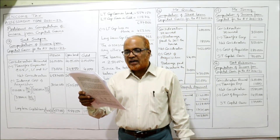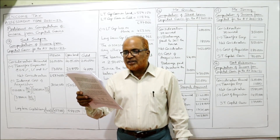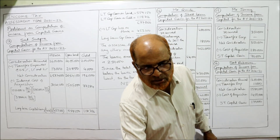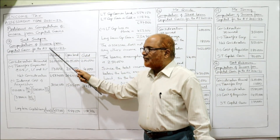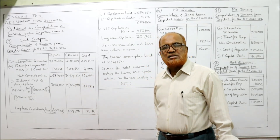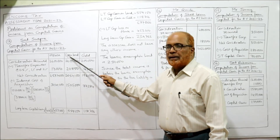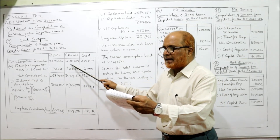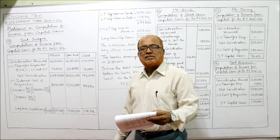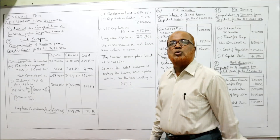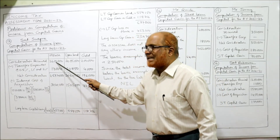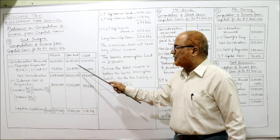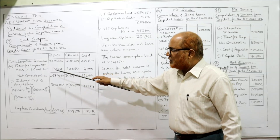The purchase price and sale price are given. Transfer expenses are allowed as a reduction. The cost inflation index for 2005-06 is 117 and for 2009-10 is 148. Now see the computation of income from capital gain for Srimathi Sopana for assessment year 21-22. Three columns in one table: house, open land, and gold. Consideration received — sale prices are 26 lakh, 20 lakh 85 thousand, and 2 lakh. Transfer expenses are 0.5%, 1%, and 2% respectively, giving deductions of 13,000, 20,850, and 4,000.